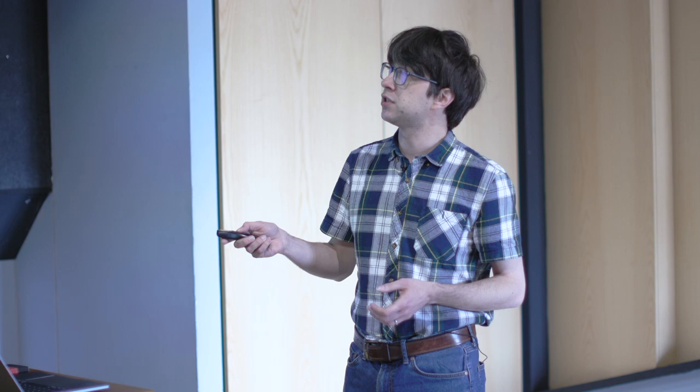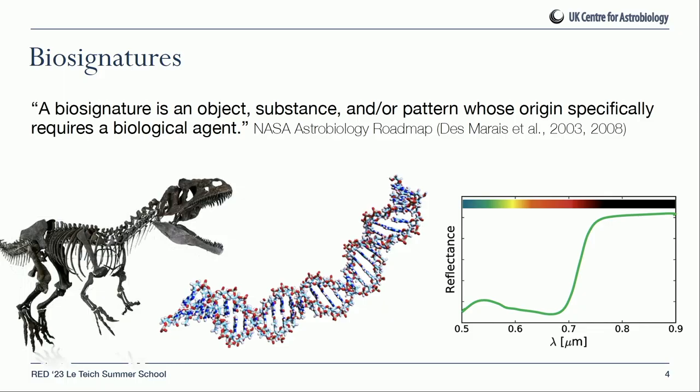This is what we might think of as a strong definition — if something's a biosignature, it must be produced by life. There are other slightly weaker definitions. Here are some examples: a dinosaur skeleton, which nobody would believe has any non-biological origin; a DNA molecule, often talked about as a chemical equivalent; and the vegetation red edge, a feature of the reflectance spectrum of vegetation and photosynthetic organisms, which I'll talk about more later — you can see this from space and it tells you there are plants on Earth.